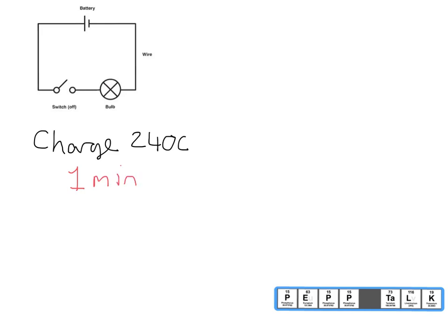I'm going to say it takes one minute. So for our calculation, current which we give the letter I is equal to the quantity of charge that has flown and the time it takes for that charge to flow.